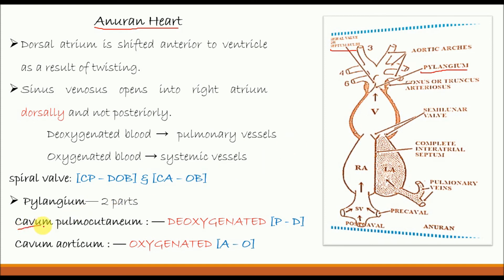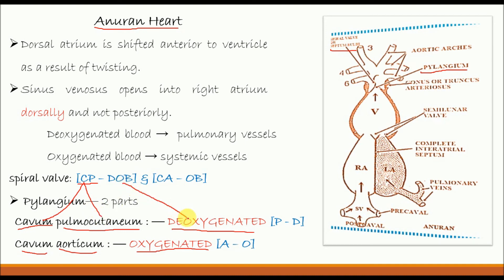One part is called cavum pulmocutaneum, which receives deoxygenated blood, and another is called cavum aorticum, which receives oxygenated blood. To remember this, we can use the mnemonic: CP — C for cavum, P for pulmocutaneum, DOB for deoxygenated blood. Similarly, CA — C for cavum, A for aorticum, OB for oxygenated blood. In this way, we can remember this in a simple and very effective manner.